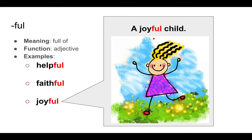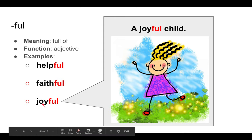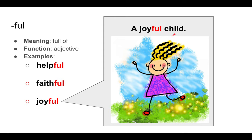And then we have -ful. This one's probably the easiest one, and it means 'full of.' And it's an adjective. For example, we say helpful — full of help. Faithful — full of faith. And joyful — full of joy. It's an adjective, so we put it before a noun: a joyful child. The child is full of joy. She is joyful.